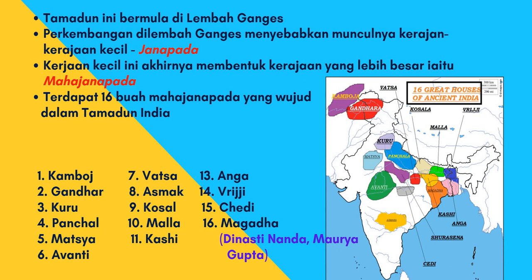Tamadun ini bermula di Lembah Ganges. Kalau Tamadun Indus dulu bermula di Lembah Indus, di Sungai Indus - area situ. Tapi kalau Tamadun India, bermula dia di area sini, iaitu Sungai Ganges. Sungai Ganges ni antara sungai suci - masyarakat India memang sangat menghormati sungai ni. Awak boleh tengok dalam buku teks muka surat 140. Perkembangan di Lembah Ganges ni menyebabkan munculnya kerajaan-kerajaan kecil, dan sungai menjadi tempat utama untuk membina kerajaan, sama seperti tamadun-tamadun sebelum ni.